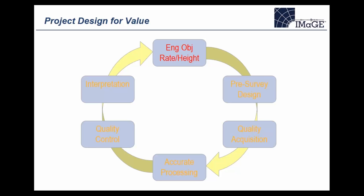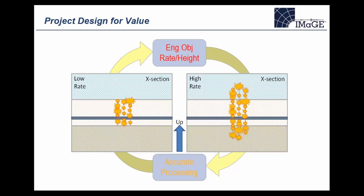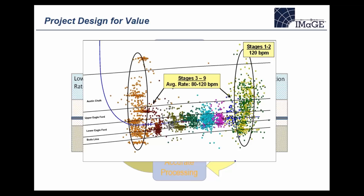Before collecting the microseismic, you could sketch out what you'd expect to see as rates change during a completion test. In a cross-sectional view, if pumping at low rate you might keep fractures contained to the reservoir target; if pumping at too high a rate, forcing fluid in too quickly, you could see some height growth and hence microseismic out of zone.